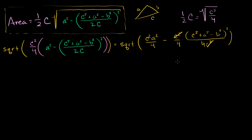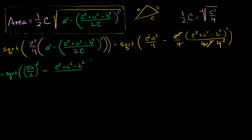This 4 times that 4 is going to result in 4 squared. Now I can rewrite this as the square root of c a over 2, squared — that's the same as c squared a squared over 4 — minus c squared plus a squared minus b squared over 4, that whole thing squared. We squared both the numerator and the denominator.